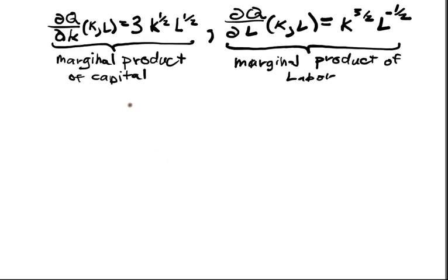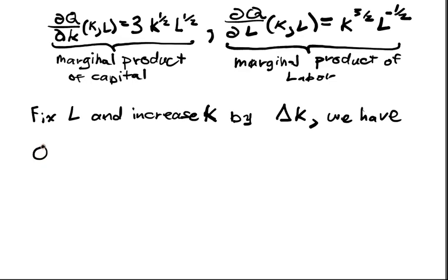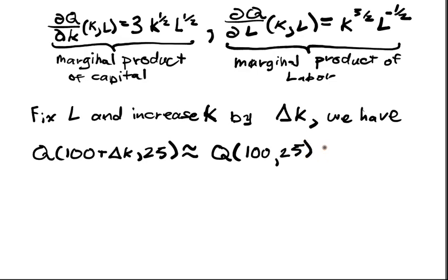So if we fix L and increase K by some marginal quantity by delta K, we have the approximation Q of 100 plus delta K, 25. Just like in one-dimensional calculus, we say that it's going to be the evaluation at that point plus the partial evaluated at that point times delta K.